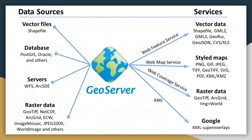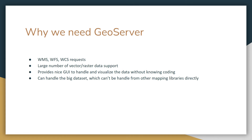GeoServer stores these different kinds of data sources on the server and allows users to access this data through WFS, WMS, WCS, and KML. GeoServer is needed for different kinds of OGC standard services and requests. Some of the OGC standards are WMS (Web Map Service), WFS (Web Feature Service), and WCS (Web Coverage Service).